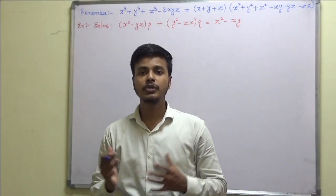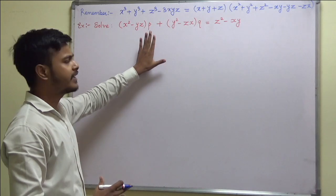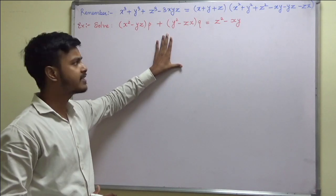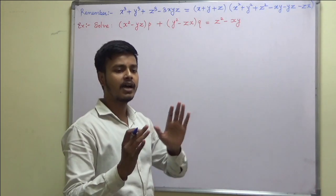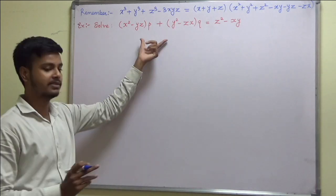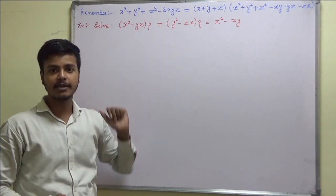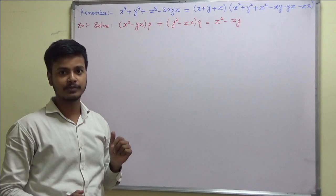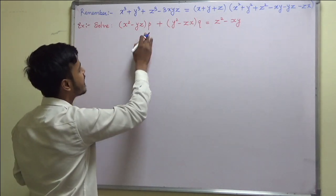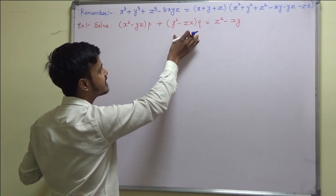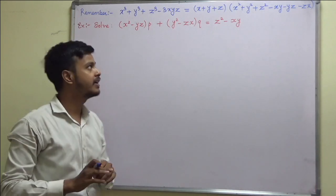Hello everyone and welcome to this learning video where we are going to take a very important example because it's a 'jara hat ke' problem type. We are given a problem: (x² - yz)p + (y² - zx)q = z² - xy.